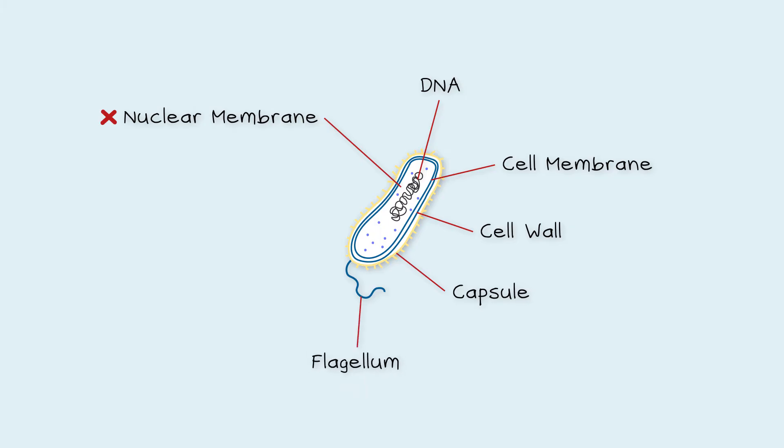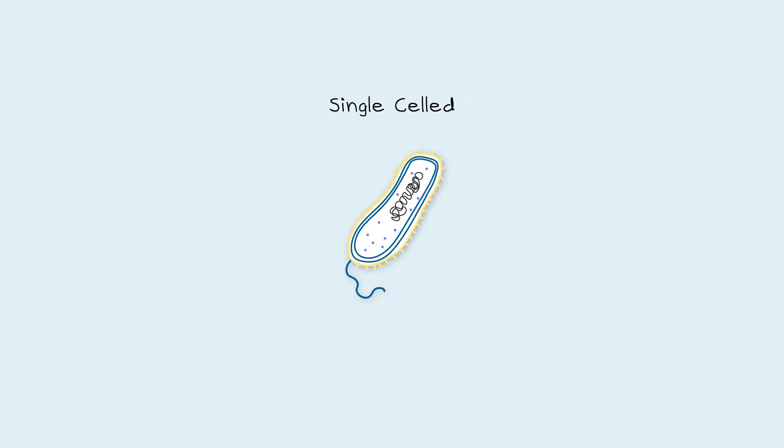and also many small pili, which help with movement, but also can interact with other cells. They also contain proteins called ribosomes, whose job is to make other proteins. Bacteria are single-celled organisms, which means everything they need to live is all inside this one cell.